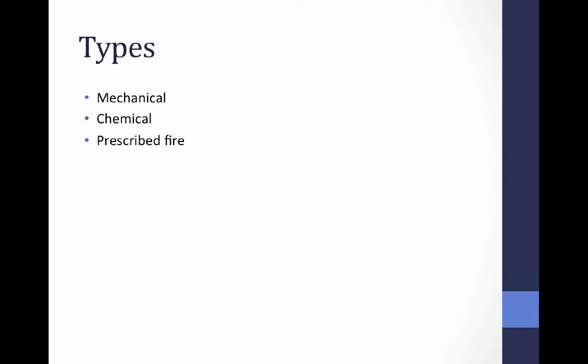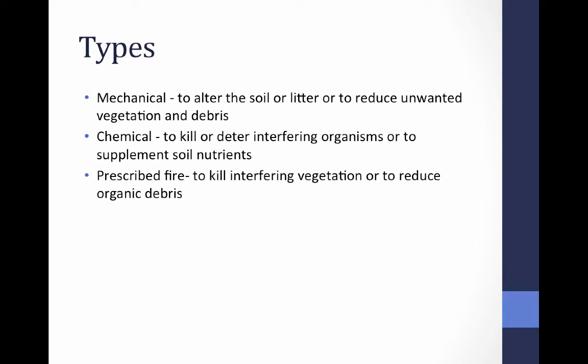An anchor chain is exactly like it sounds — a chain with an anchor on it that you drive to scarify and mix up the soil. That's a fairly intensive mechanical type of site prep. We also have chemical and prescribed fire. Mechanical site prep goals include altering the soil, litter, or reducing unwanted vegetation or debris. Chemical — think herbicide — is used to kill or deter interfering organisms or to supplement fertilizer. Prescribed fire is used when we time it to kill interfering vegetation or reduce organic debris.